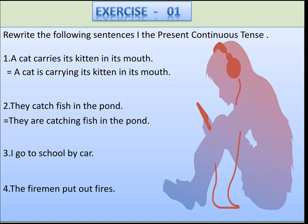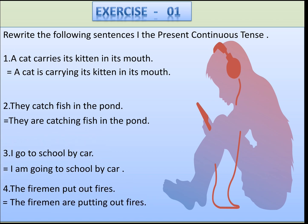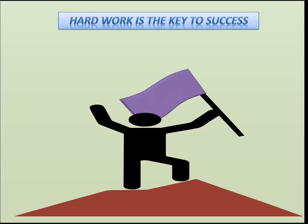Next: 'They catch fish in the pond.' They is plural, so we use 'are' and add -ing: 'They are catching fish in the pond.' Third: 'I go to school by car' becomes 'I am going to school by car.' Fourth: 'The firemen put out fires.' Firemen is plural, so: 'The firemen are putting out fires.'